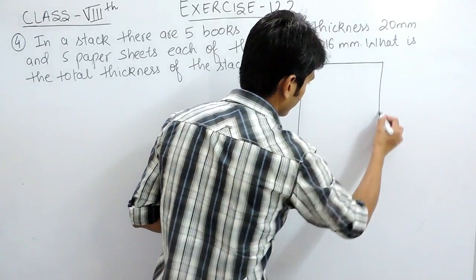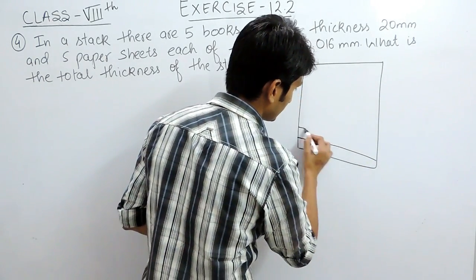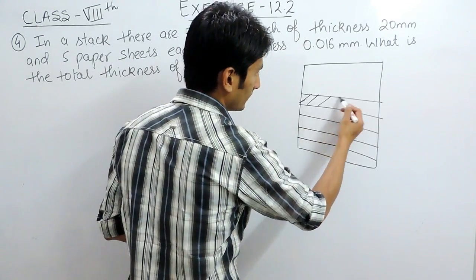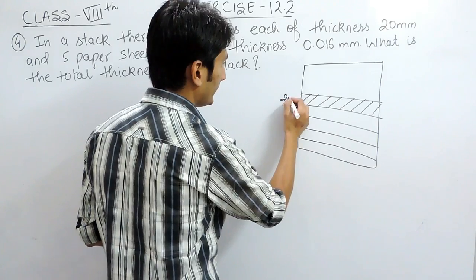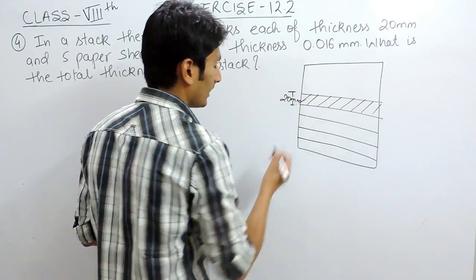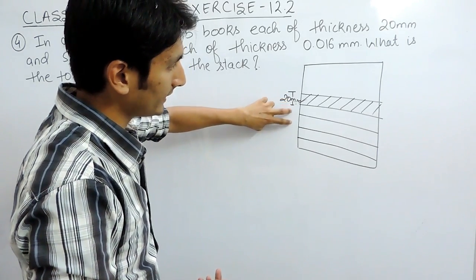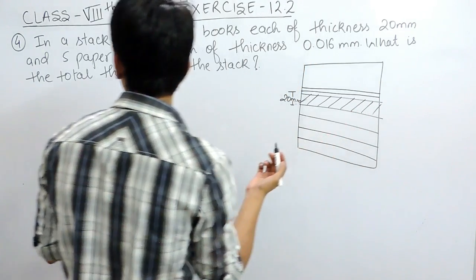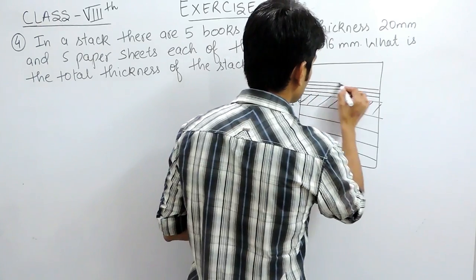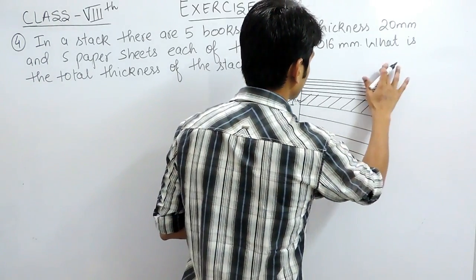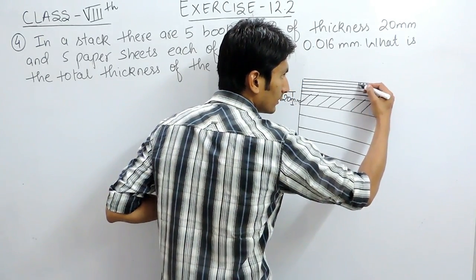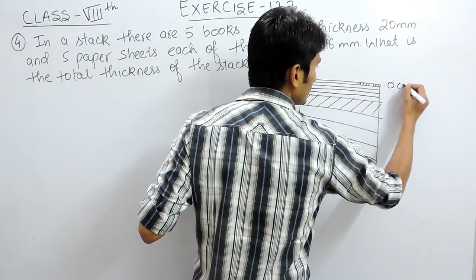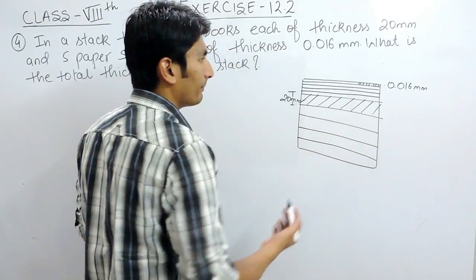Suppose this is the stack and it contains 5 books, and the thickness of each book is 20 mm. So each book has thickness 20, 20, 20, 20, and 20. Plus it has 5 paper sheets above this, and the thickness of every paper sheet is 0.016 millimeters.